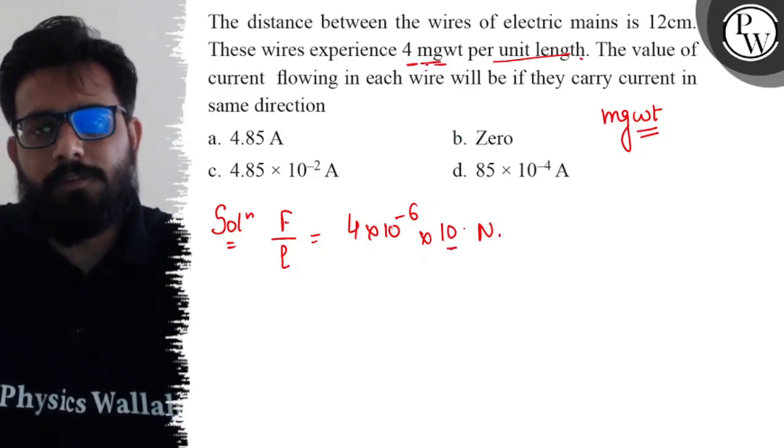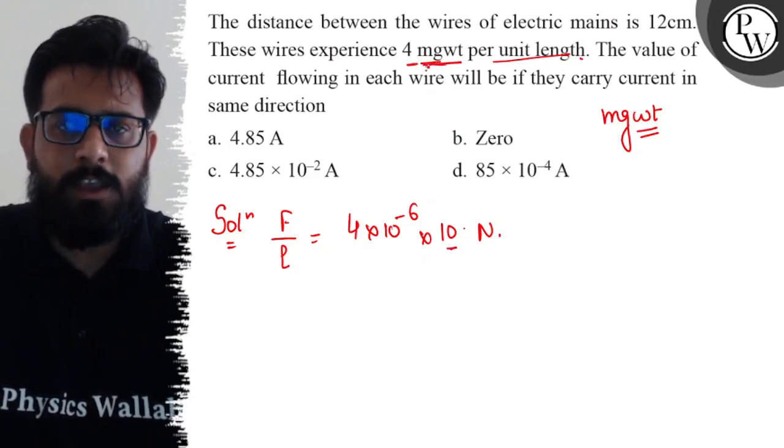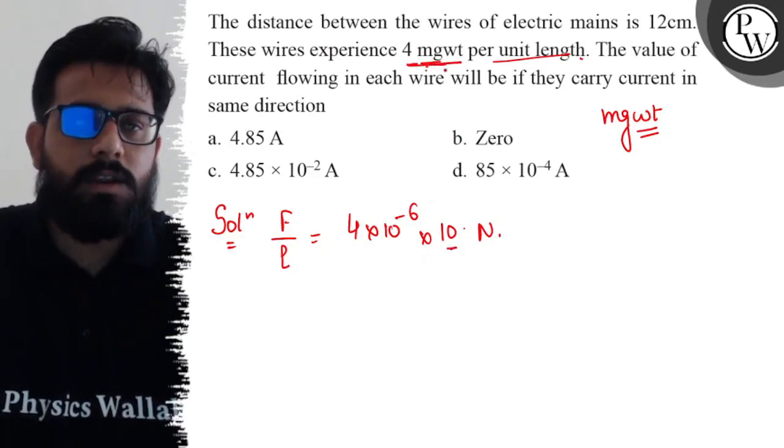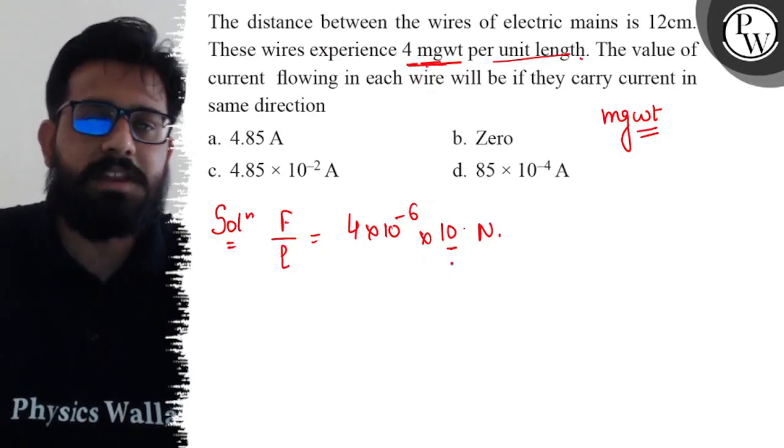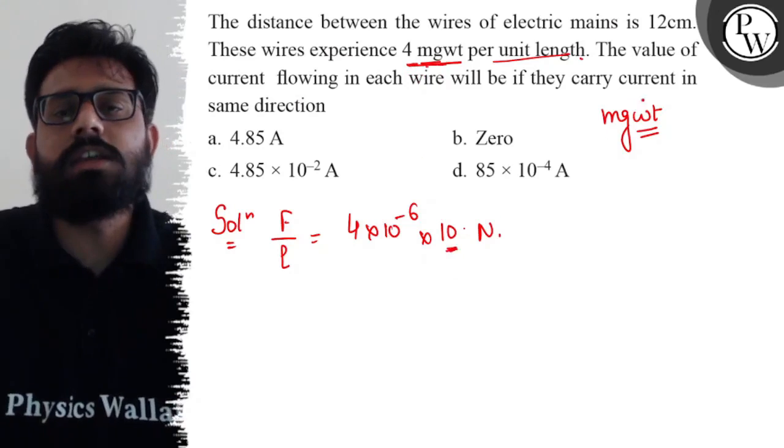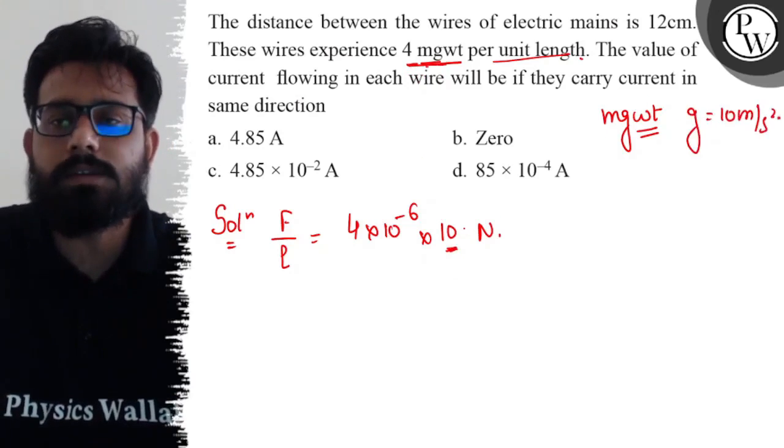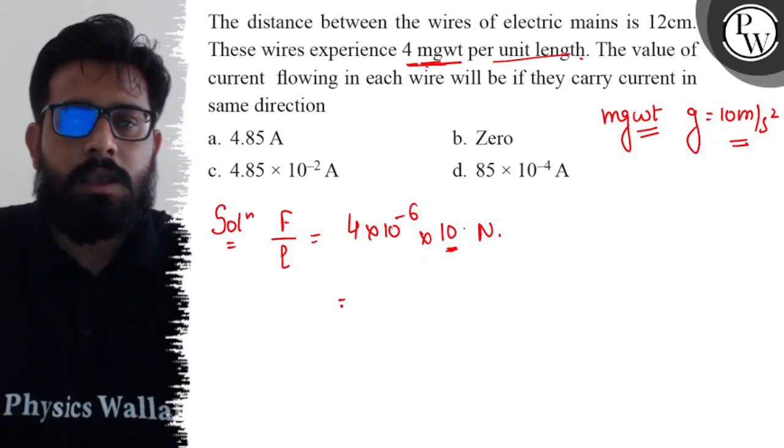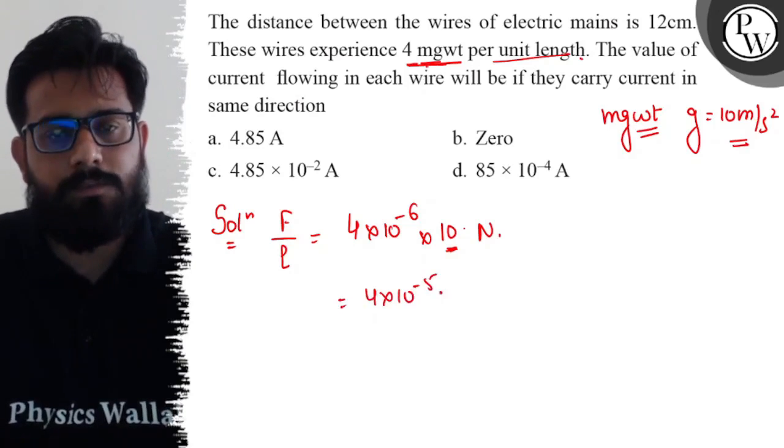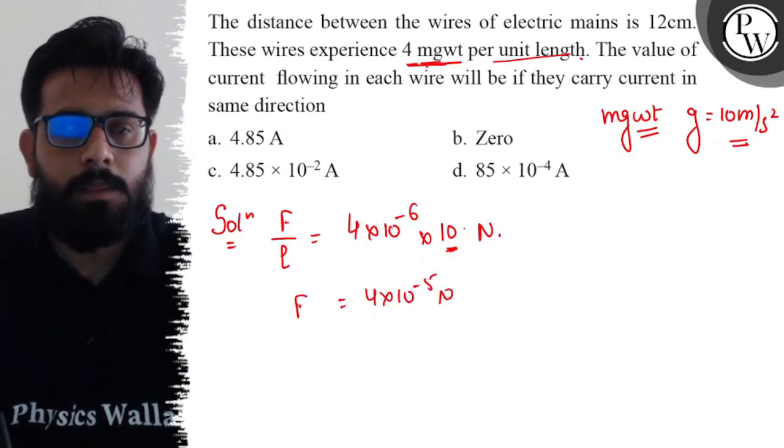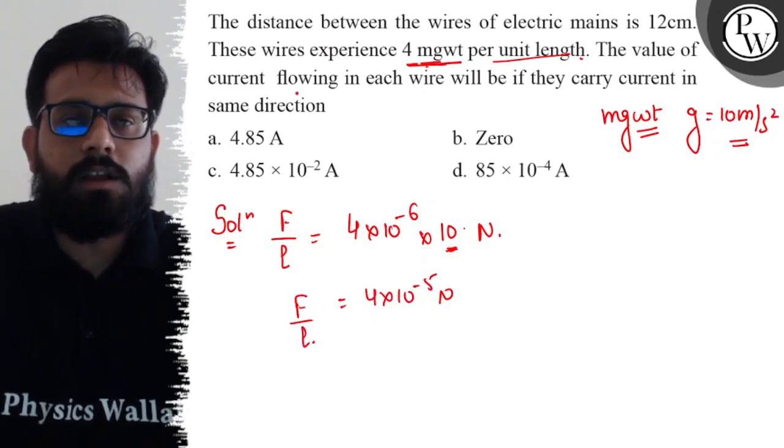When the force is in milligram-weight, you have to convert it by multiplying with g. G is the acceleration due to gravity, approximately 10 m/s². Once you consider this, you will get a value of 4 × 10^-5 N. This is the value of F/L. Now I have to find out the value of current.